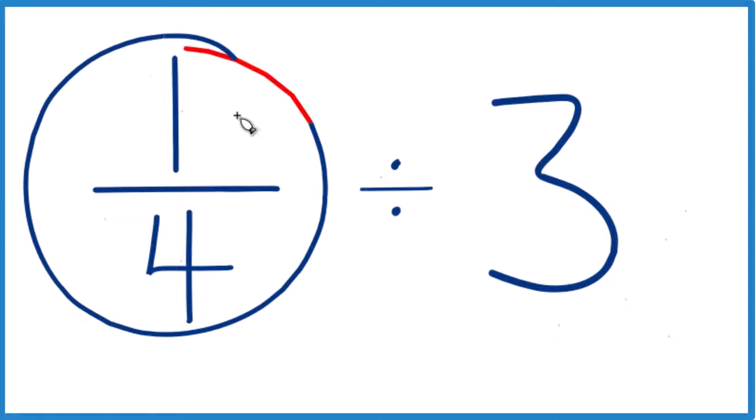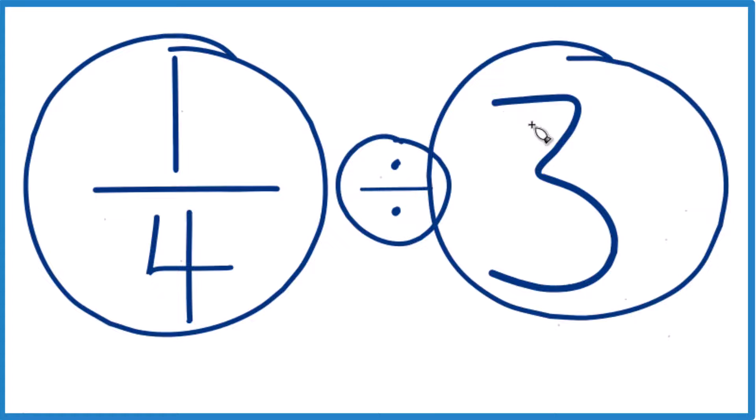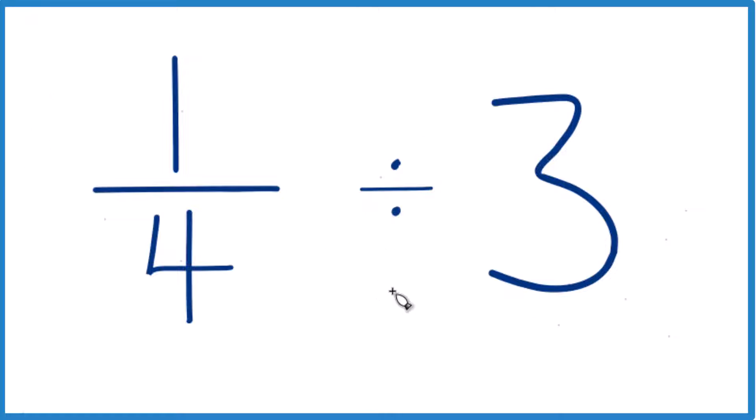So let's figure out one-fourth divided by three. The first thing I like to do is look at this and think, well, one-fourth, that's pretty small. We're trying to fit this whole number into a number less than one, so we should end up with a smaller number, end up with a fraction. Keep that in mind.